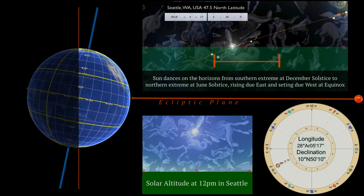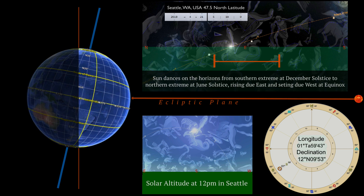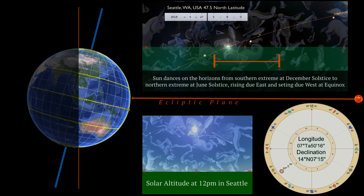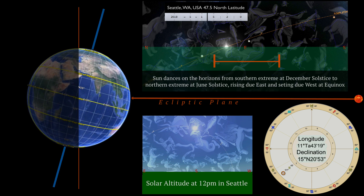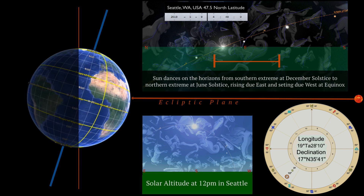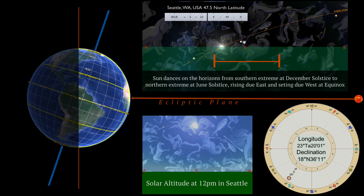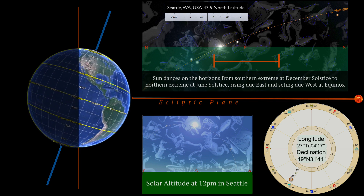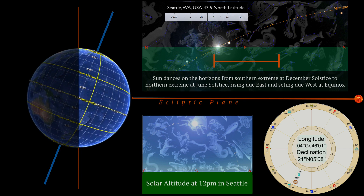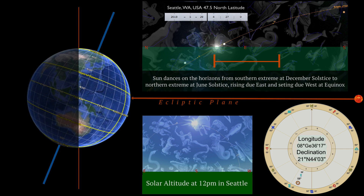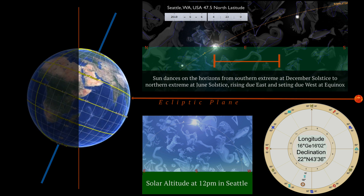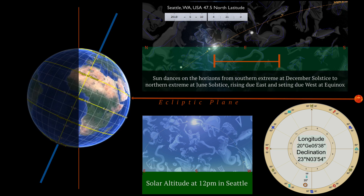Of course, the opposite is true for southern hemisphere locations, where December solstice brings the height of the light. In the upper right, we'll witness the dance of sunrise on the eastern horizon as seen from Seattle, Washington, where the Sun rises 36 degrees south of east at December solstice and 36 degrees north of east at June solstice. Between these two extremes, the Sun rises due east and sets due west at both March equinox and September equinox.